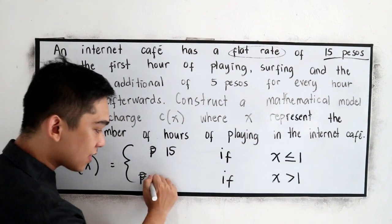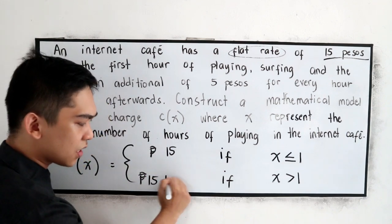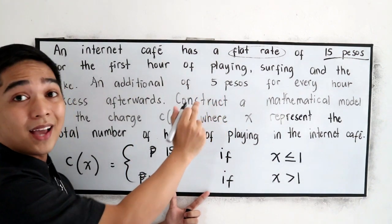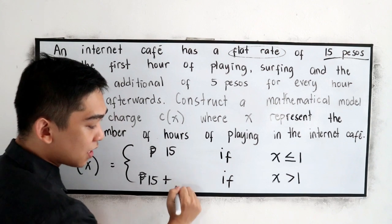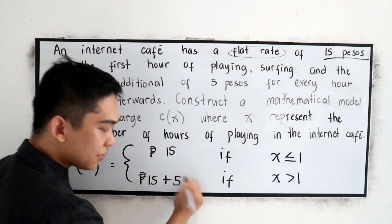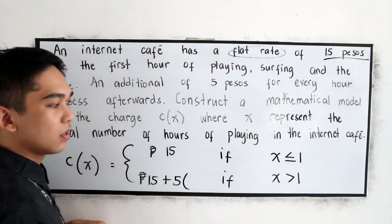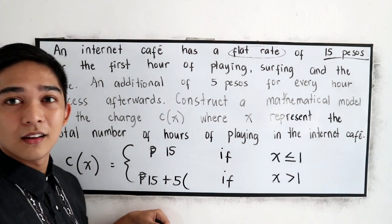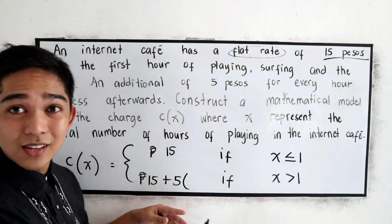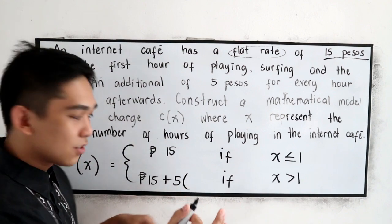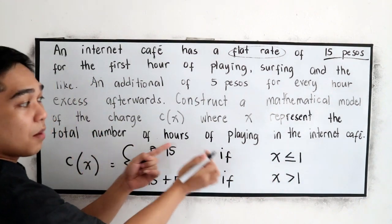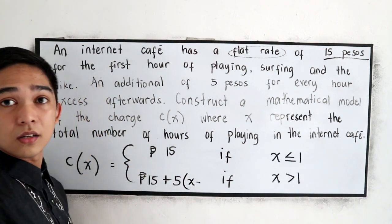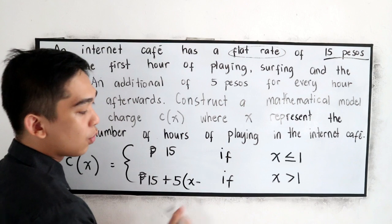So ang fixed rate natin ay 15. Syempre i-add natin, 15 pesos i-add natin doon yung magiging additional na bayad niya. So ang additional na bayad natin, 5 times yung number of hours. I-google nyo doon sa internet cafe, so let's say x is the representative total number of hours, so x minus ang base natin dito is 1.